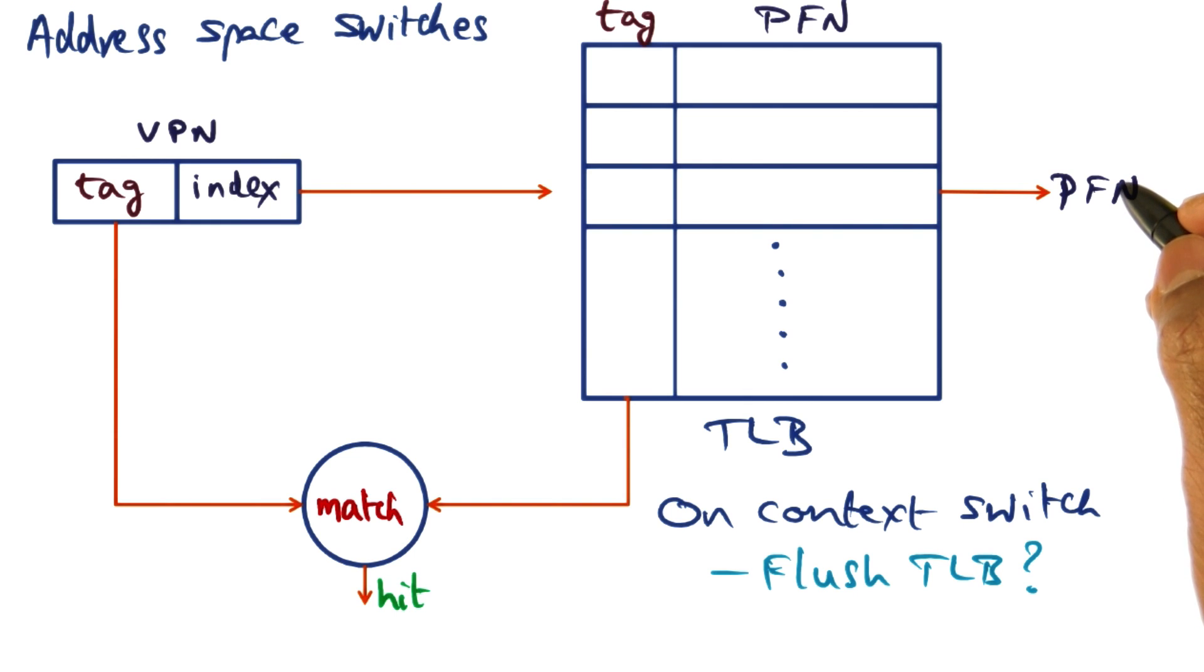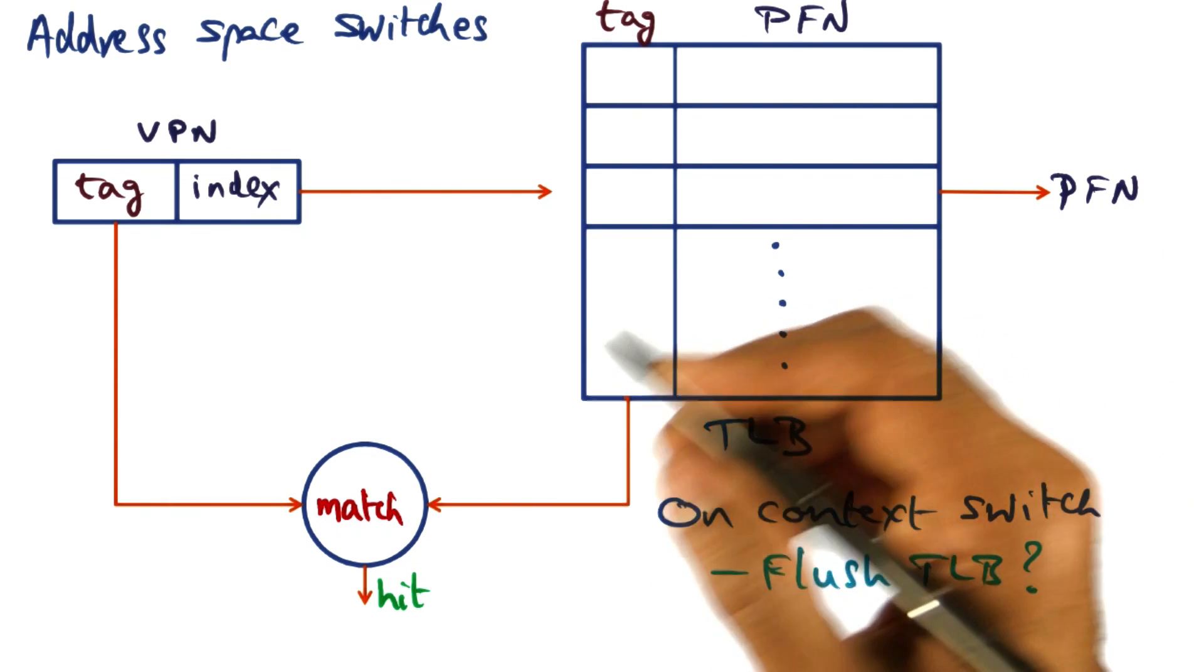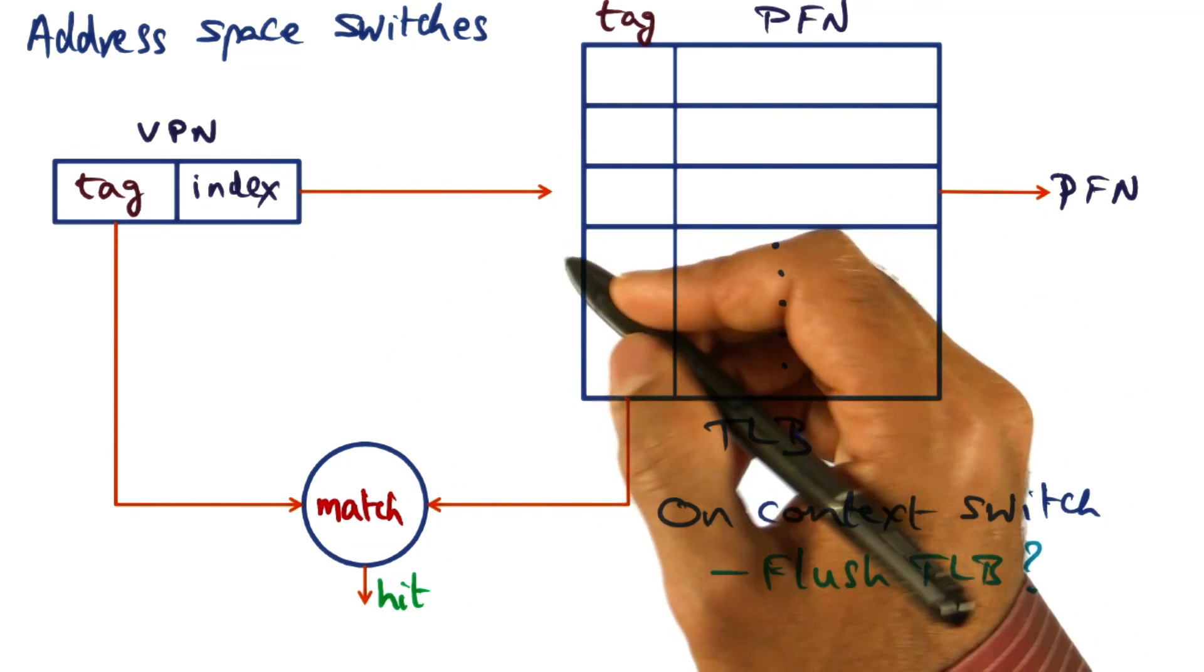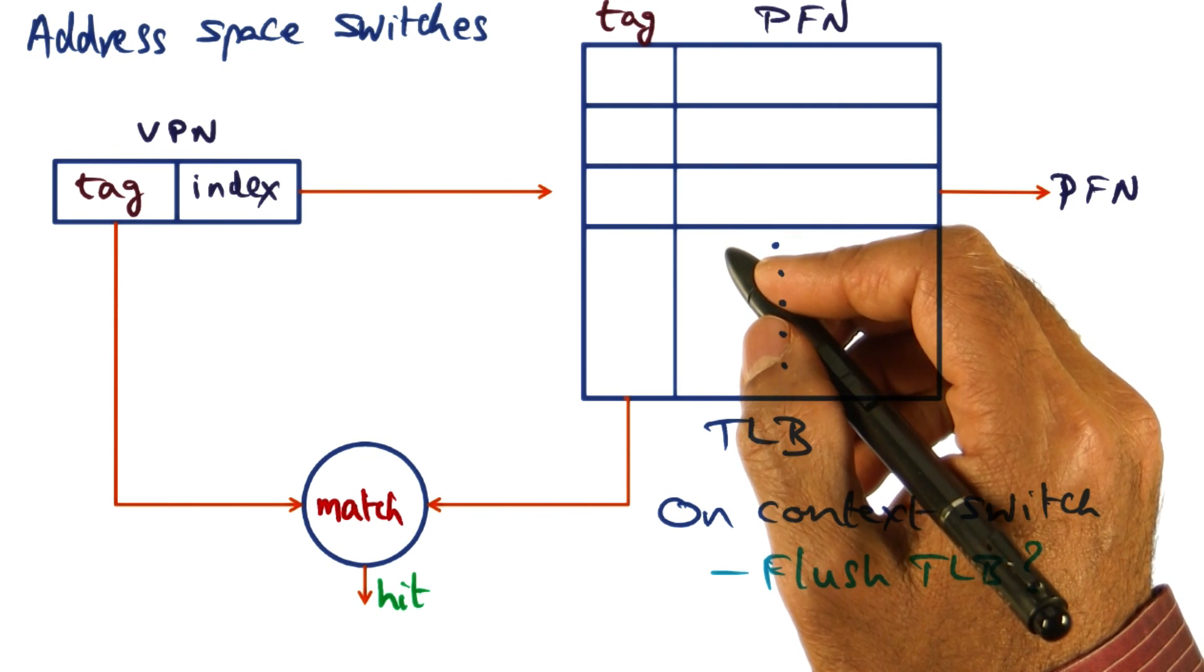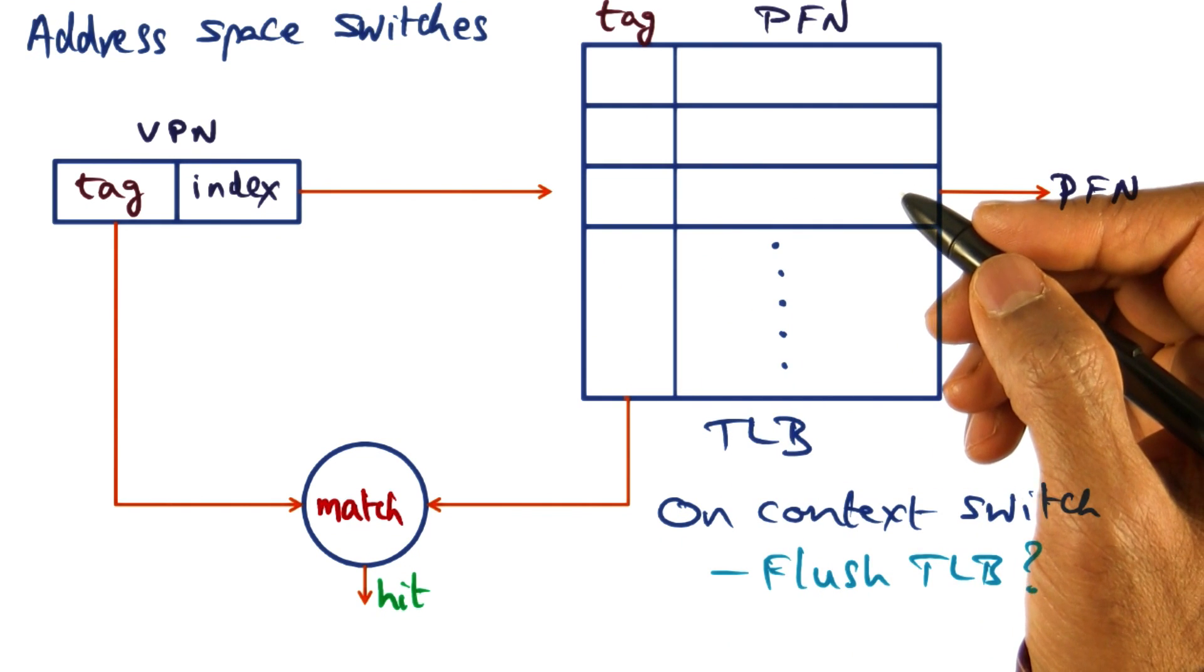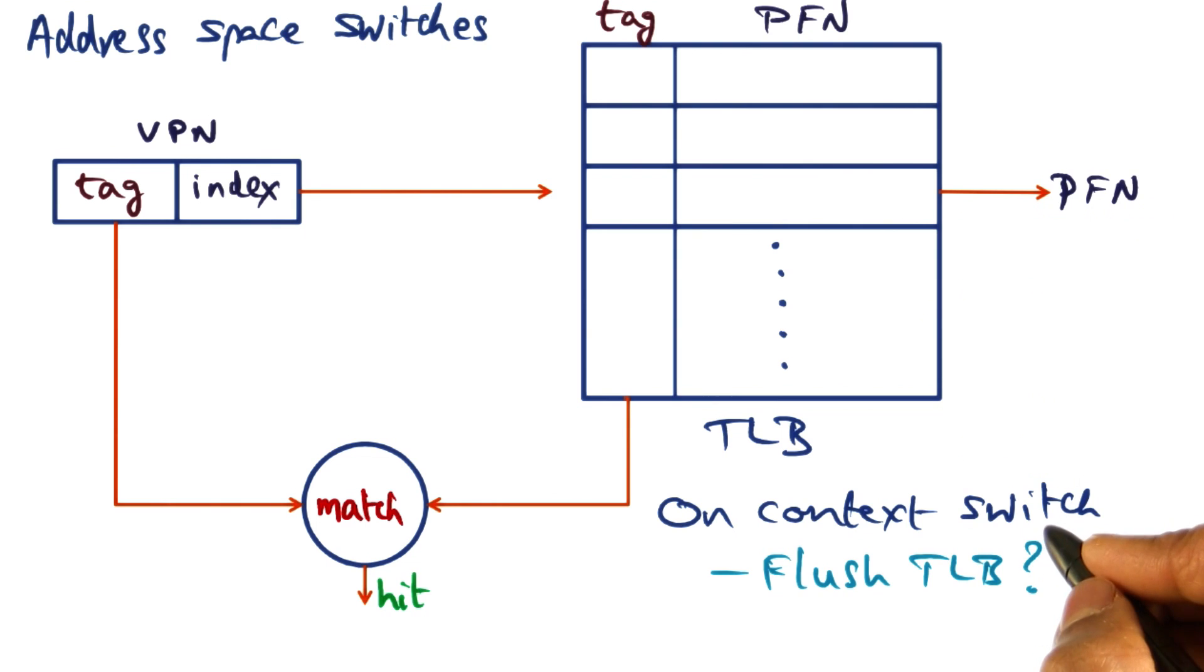Now what happens on an address space switch, that is a context switch going from one address space to another address space. On a context switch, the virtual address to physical address mapping will change for the new process that is going to be scheduled.